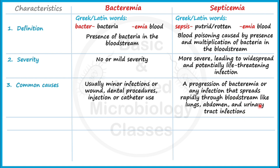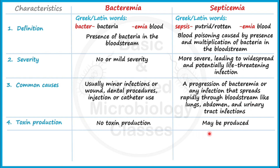The fourth point of difference is toxin production. In case of Bacteremia, toxin production is not usually reported. In Septicemia, toxins may be produced depending on the causal agent — for example, gram-negative bacteria capable of producing endotoxins can release those toxins into the bloodstream.